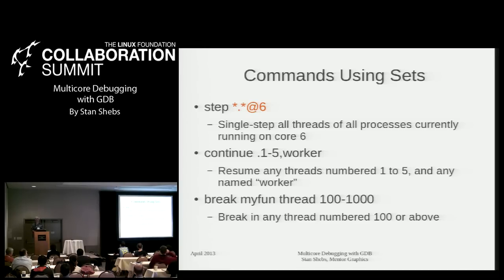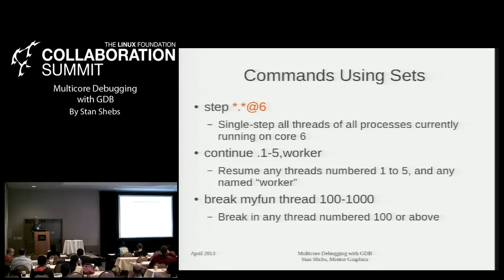As a first example: single-step all threads of all processes currently attached to core six — so any process with its affinity set to core six. You should also be able to do a continue specifying a specific set of threads, including both by numbers and names. For instance, if the thread named 'worker' is given different numbers depending on how thread allocation works, you can refer to it by name. This particular continue command solves the problem of having to start individual threads one at a time and getting into ordering difficulties.